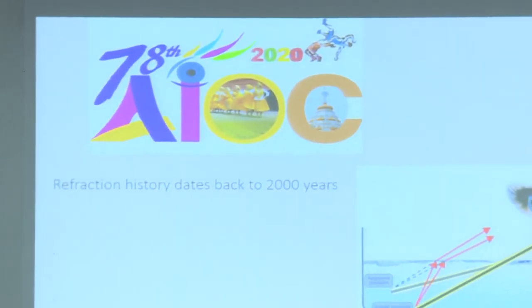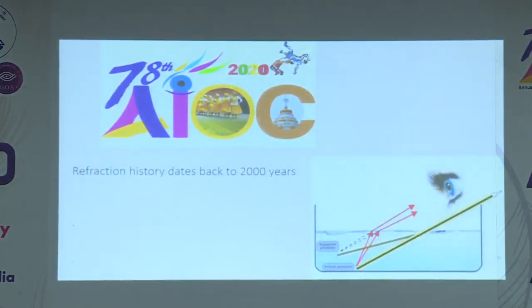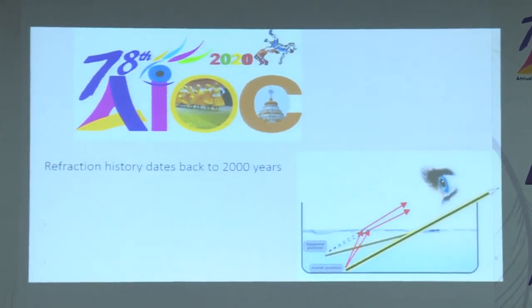Introduction to today's instruction course. Refraction history dates back 2000 or more years. The prehistoric man might have been perplexed while looking at fishing — the actual position of the fish might have been mistaken for the apparent position.